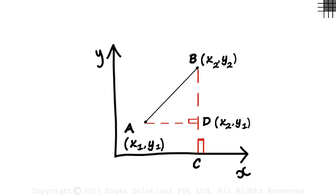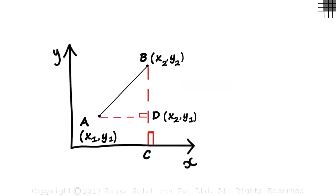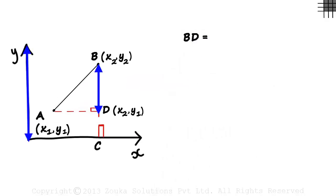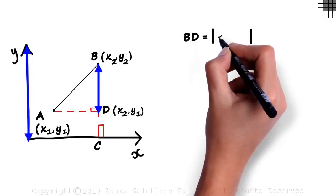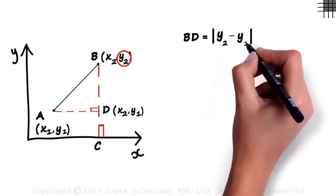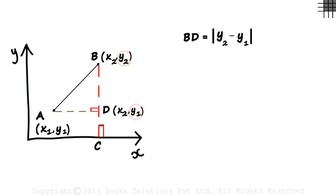Now we find the lengths of AD and BD and then use Pythagoras theorem to find the length of AB. Since BD is parallel to the y axis, it will equal the absolute value of y2 minus y1. And since AD is parallel to the x axis, it will equal absolute value of x2 minus x1.